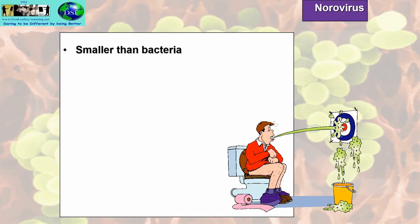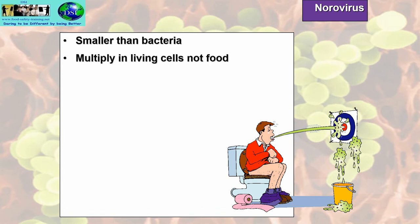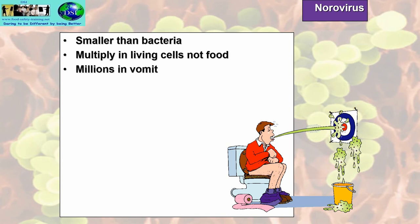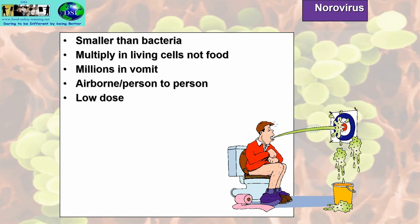Norovirus — it is smaller than bacteria, up to 100 times smaller. Viruses multiply in living cells, not food. There are millions of viral particles in vomit, and airborne person-to-person transmission is quite common — there are also millions in sneezes and coughs. Low doses are required to cause infection — even single particles rather than hundreds of thousands.